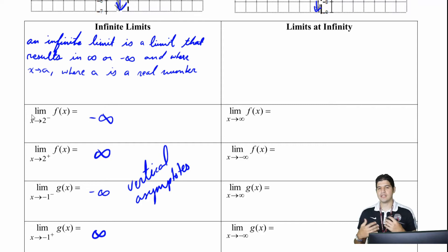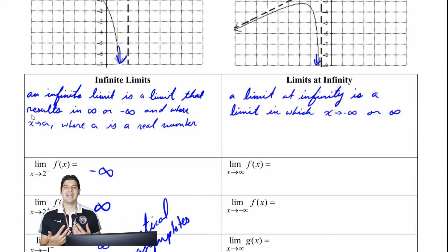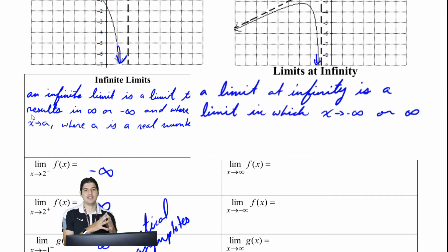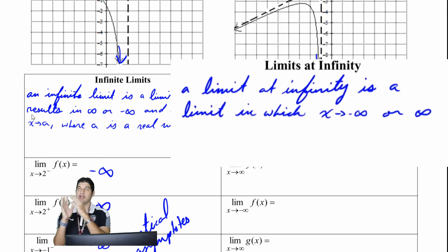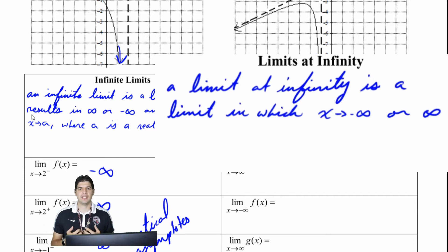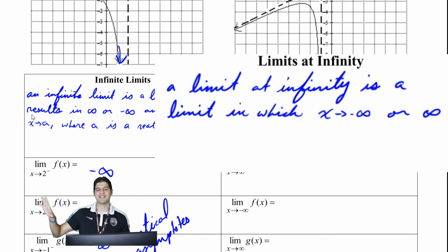So now let's look at limits at infinity. A limit at infinity is a limit in which x is approaching either negative or positive infinity. So you're looking really at end behavior — what's happening on the right side or what's happening on the left side.